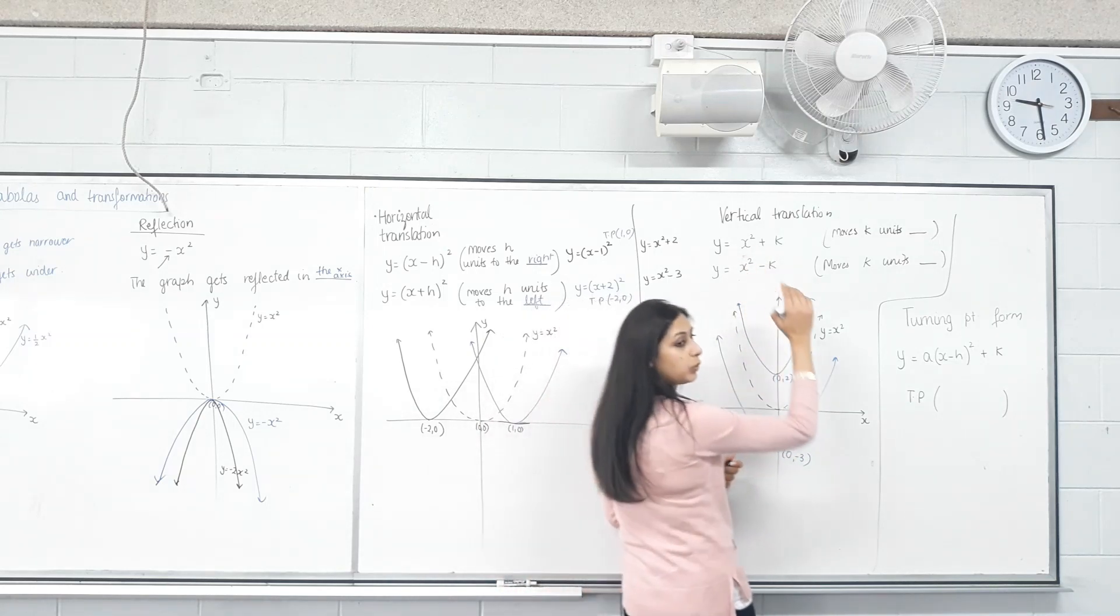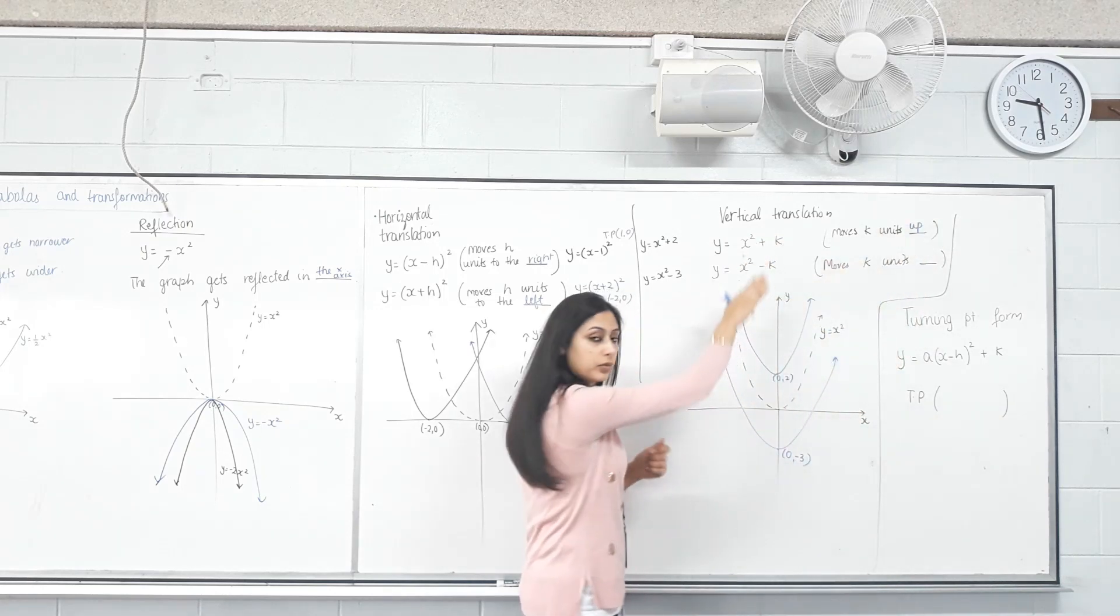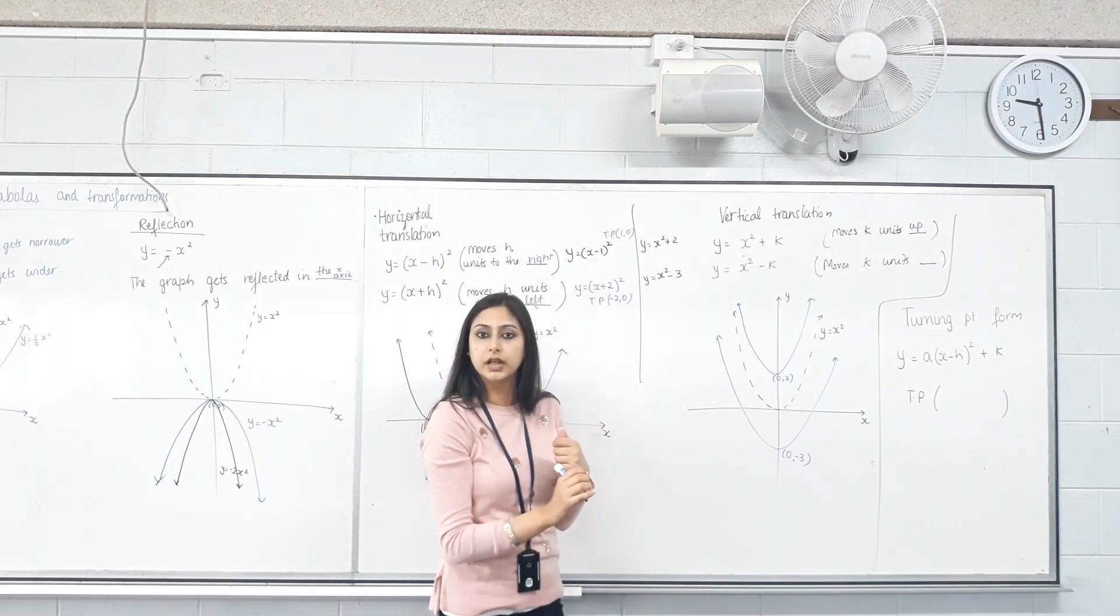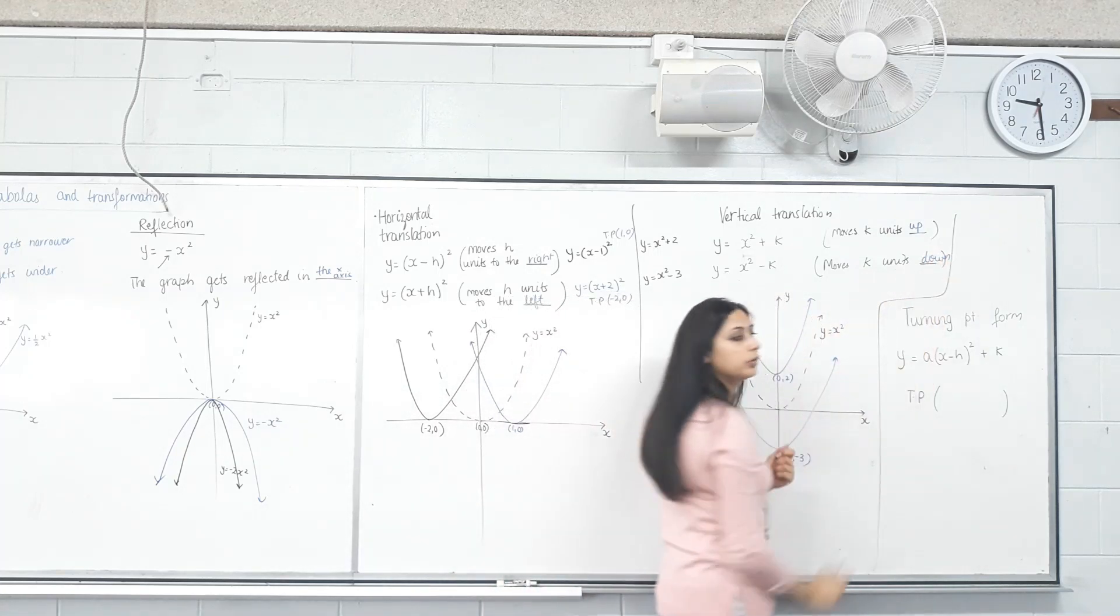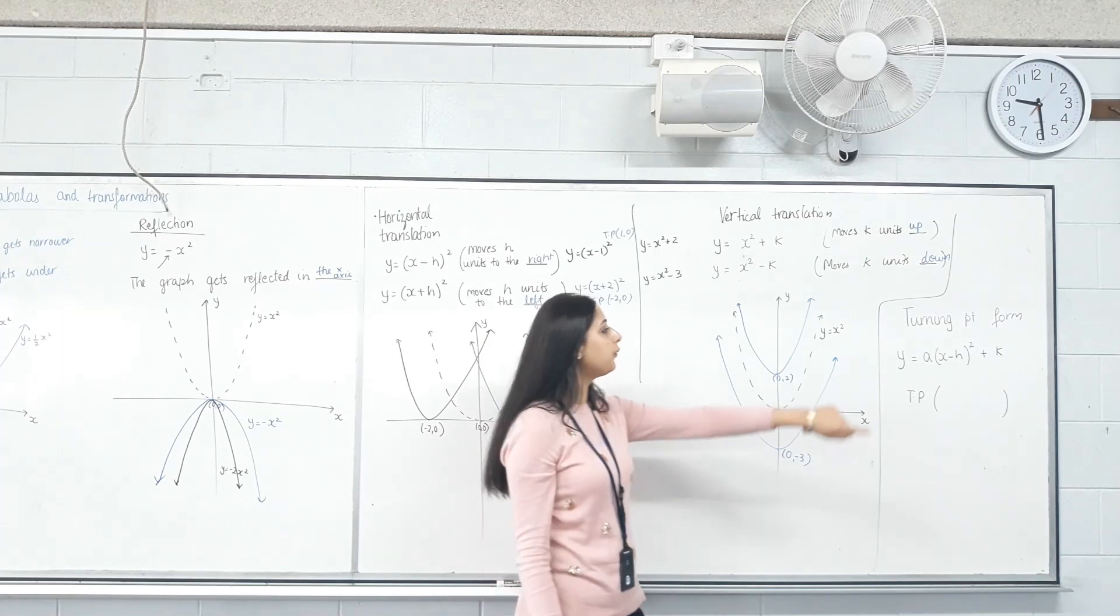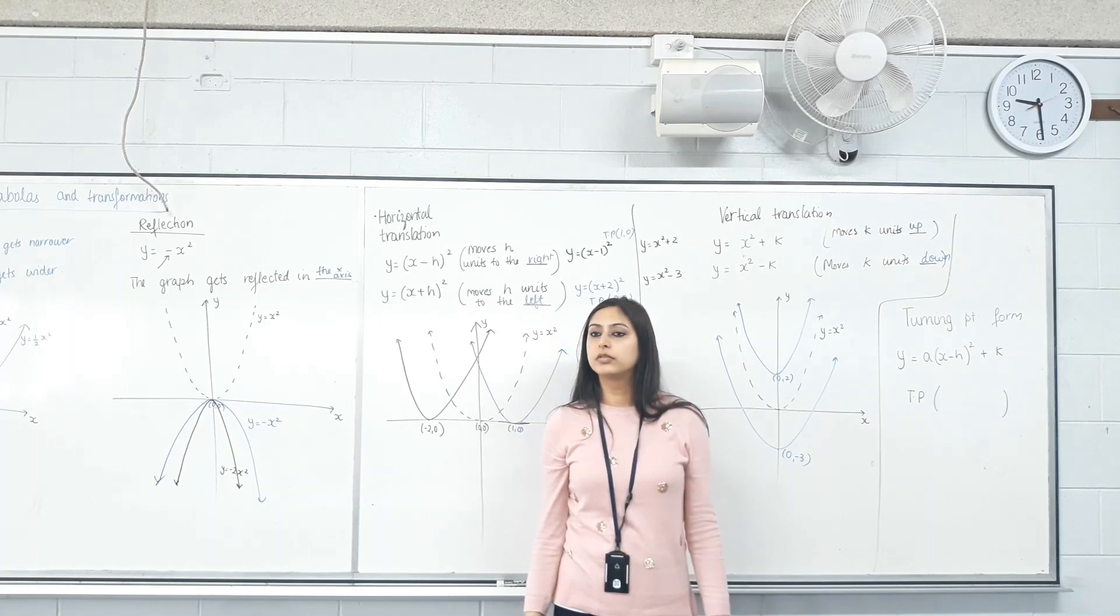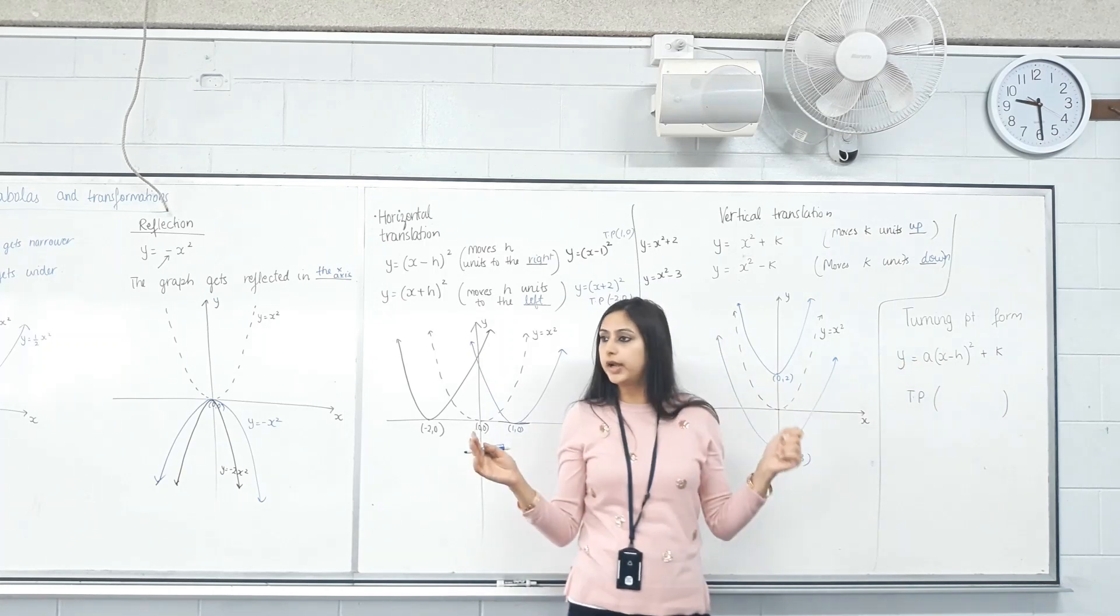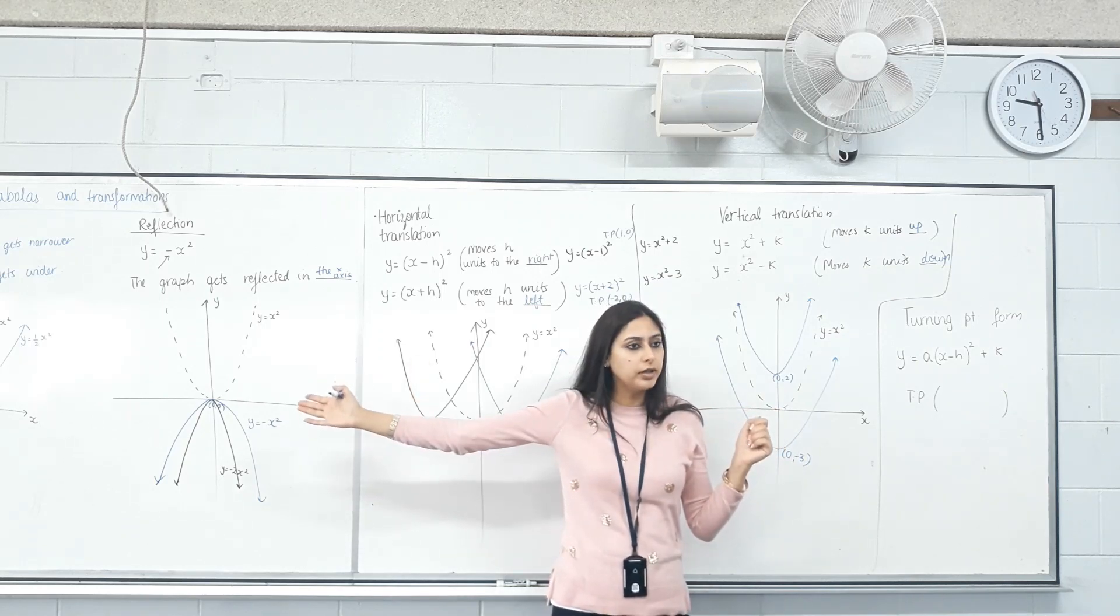So if we add k, it moves k units up. If you subtract k, it moves k units down. Now, what if we have all of this together? We need to figure out the turning point, and we can easily because it's called the turning point form. The number before the x-squared is the dilation factor. We agree it makes it narrower or wider. But does it change the turning point? No.